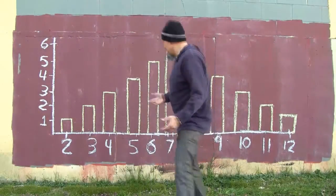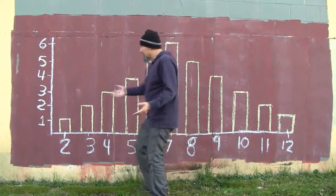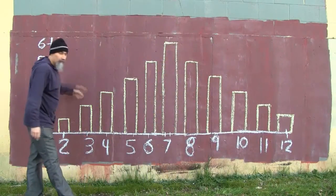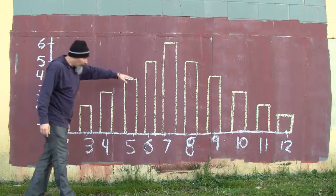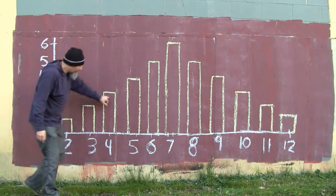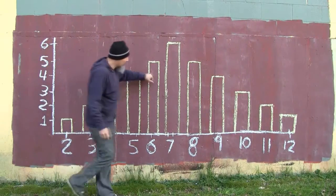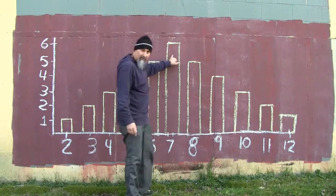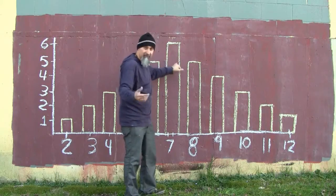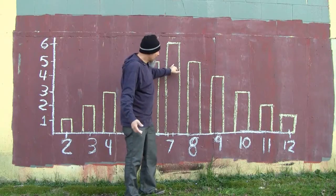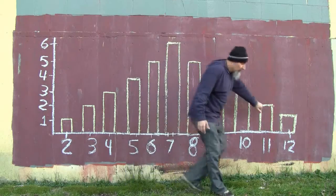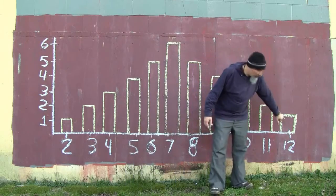This is what the probability distribution looks like for rolling two dice — a bar graph with one combination for two, then two, three, four, five, six combinations for seven, which has the most. Then you go back down: five, four, three, two, one.